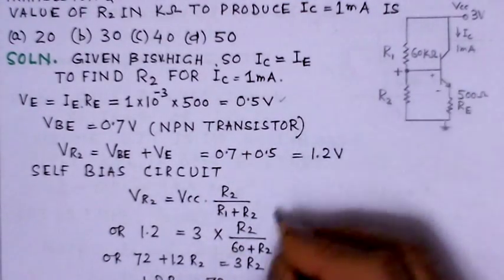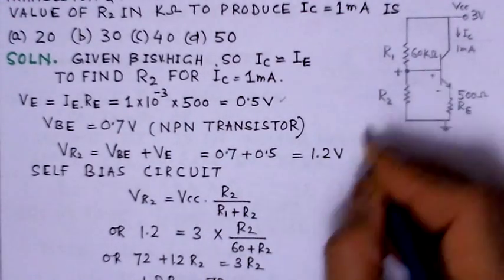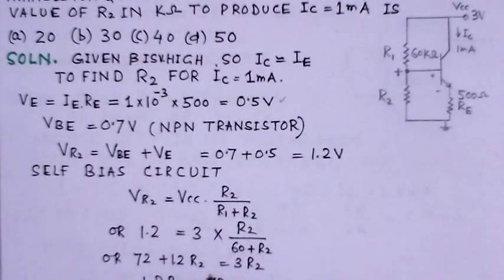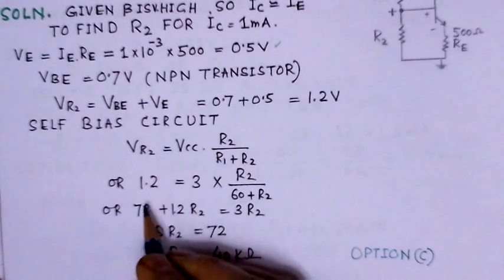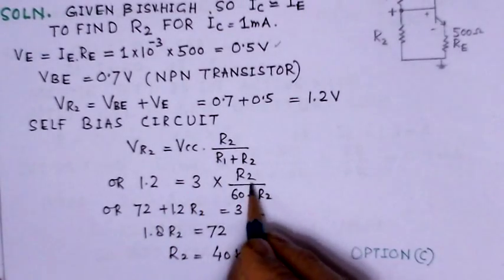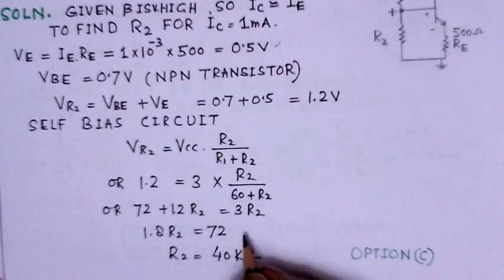This R2 is not known, to this R2 plus 60 kilohms, all values are in kilohms. So, this value will come to 1.2 equals to 3 into R2 upon this. So, if we simplify this, this comes to be 40 kilohms.